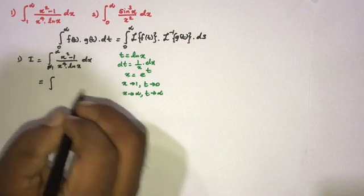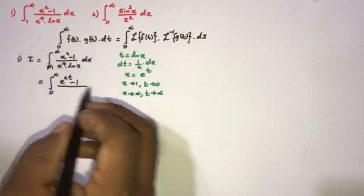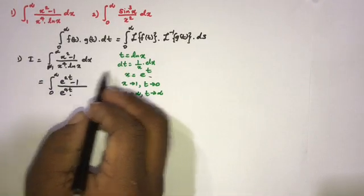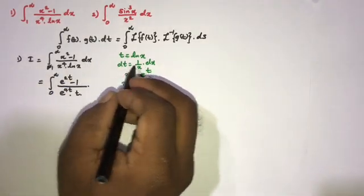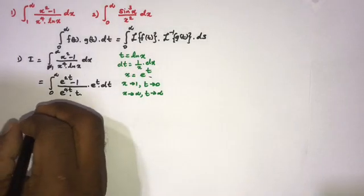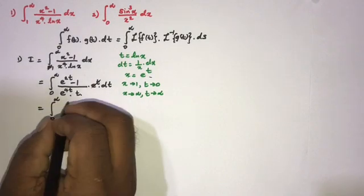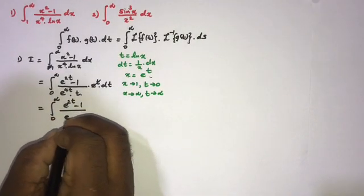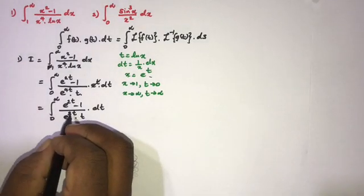After substitution, x² = e^(2t) and x⁴ = e^(4t), so the integral from 0 to infinity becomes (e^(2t) − 1) over (e^(4t) · t) times e^t dt. Simplifying, the e^t terms cancel, giving the integral from 0 to infinity of (e^(2t) − 1) over (e^(3t) · t) dt. Dividing through by e^(3t) yields the integral from 0 to infinity of (e^(−t) − e^(−3t)) / t dt.